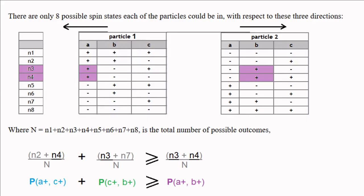Since the spin on particle 1 is always the opposite of the spin on its entangled partner, this means that the probability that s1 is plus along a and minus along c, plus the probability that s1 is plus along c and minus along b, is greater than or equal to the probability that s1 is plus along a and minus along b.